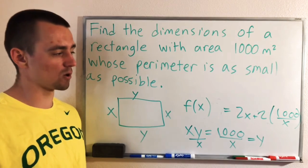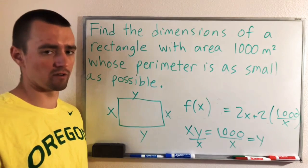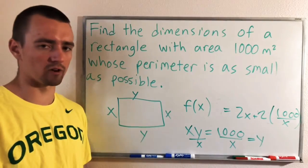So first of all, we need to find the critical numbers which occur wherever the function's derivative equals 0 or wherever the derivative is undefined. So let's think about that first. The first thing we need to do is find the function's derivative.